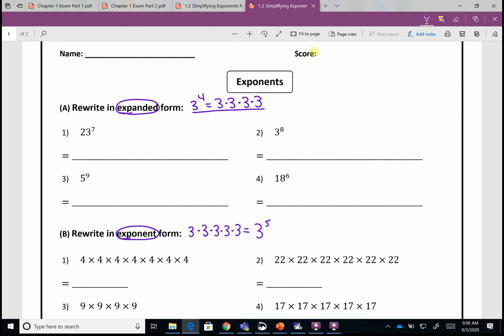If we have 23 to the seventh, we need to multiply 23 times itself seven times. It does not mean 23 times seven. In number two, we're going to multiply three times itself the exponent tells us to do that eight times.